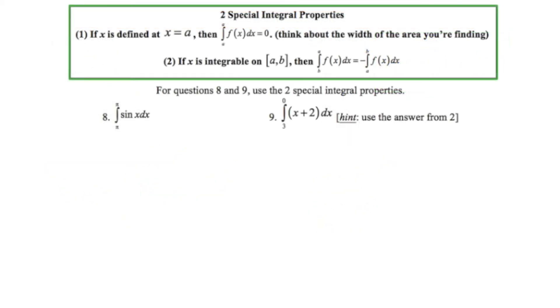On this slide we're going to be looking at two special integral properties. The first one says if x is defined at x equals a then the definite integral of f from a to a is equal to zero. So this is pretty interesting. Our lower limit is a and our upper limit is also a.